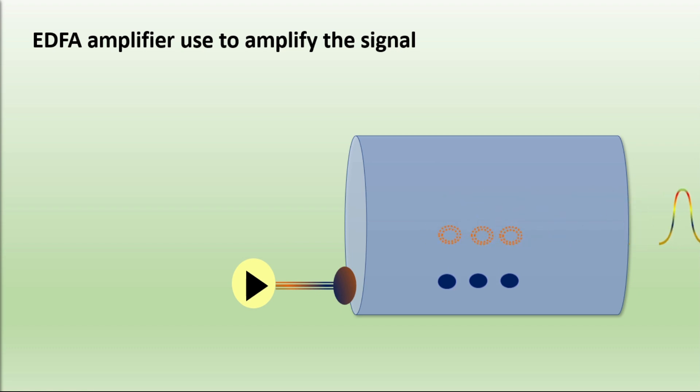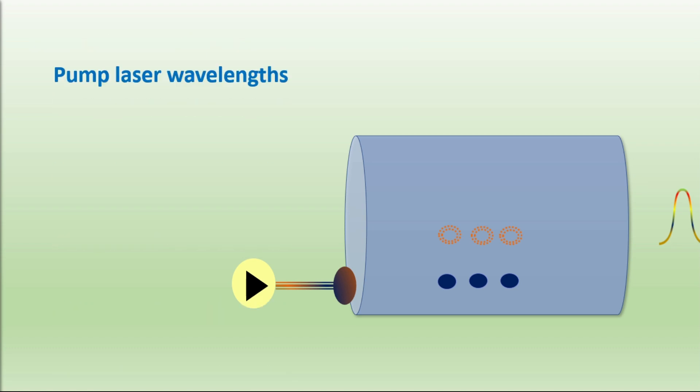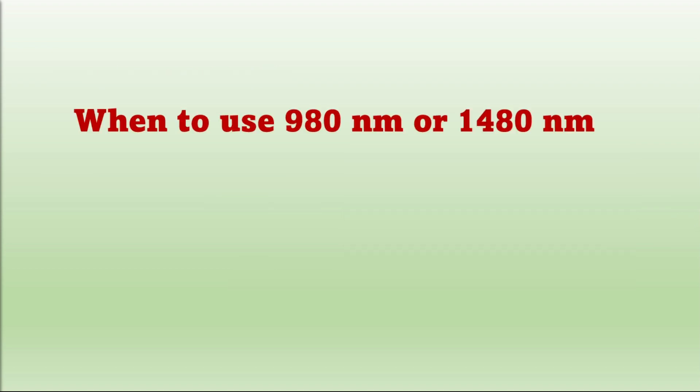To excite the ions need pump laser at specific wavelengths. We are using two pump wavelengths in EDFA: one is 980 nanometer and second is 1480 nanometer. So the question is when to use which wavelength amplifier, or what's the difference between using them?